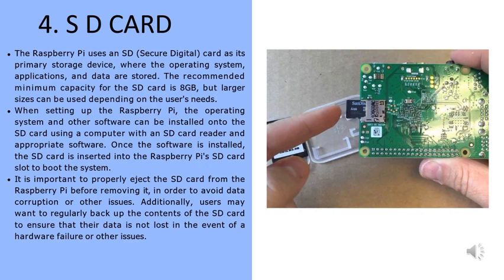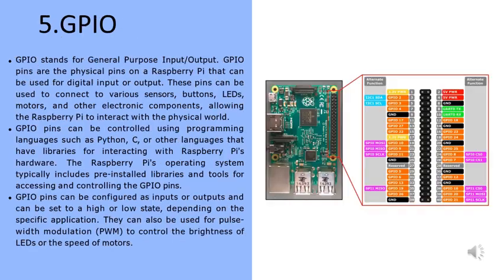The fifth part is GPIO, which stands for General Purpose Input/Output. GPIO pins are the physical pins on the Raspberry Pi that can be used for digital input or output. These pins can be used to connect to various sensors, buttons, LEDs, motors, and other electronic components, allowing the Raspberry Pi to interact with the physical world.